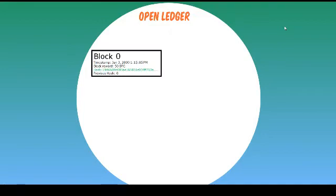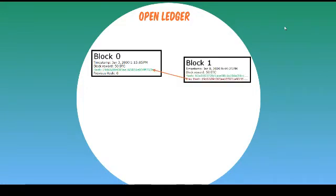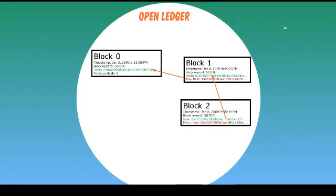Now let us understand what makes Bitcoin or blockchain unhackable. In Bitcoin, transactions are grouped into what is called a block — a consolidated list of Bitcoin transactions. At this time, a block in Bitcoin is 1 MB in size and can store approximately 2,200 transactions. Each block is hashed to a unique output, so if anyone makes any change to any transaction, the hash value will change completely. When the next block is generated, it is linked to the previous block through a previous hash field, and the subsequent block is linked to the prior block, and so on. These blocks are chained to each other — hence the name blockchain. Blocks are added at the rate of approximately every 10 minutes.